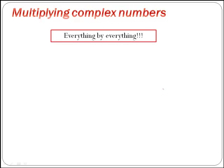For multiplying complex numbers given in Cartesian form, we'll just do it as when we were multiplying out brackets. We'll do everything by everything.